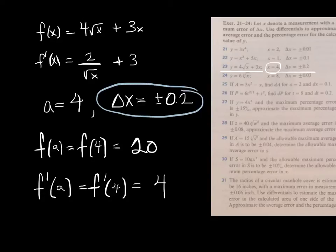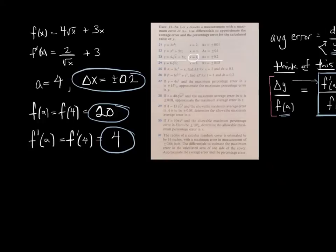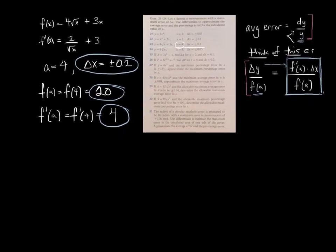There we go. We've got delta x. We've got f of a. And we've got f prime of a. Which means that we're just about ready to put it all into this formula right here.